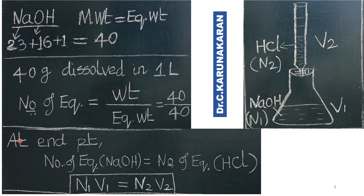At the end point — the neutralization point — the number of equivalents of sodium hydroxide equals the number of equivalents of HCl. This is the N1, V1, N2, V2 relationship we derived in the previous slide.